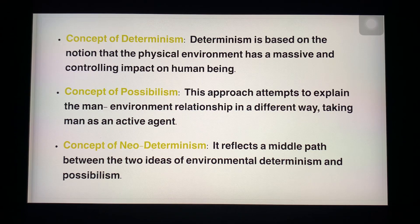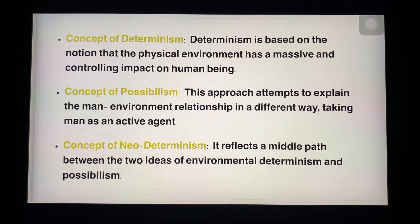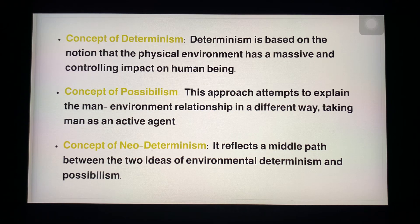Determinism is based on the notion that the physical environment has a massive and controlling impact on human beings. Determinism is dependent on the physical environment, which is quite large, and its controlling power impacts human activity. Natural forces like waves, water, air, and earth — everything created by God or the earth — we have no control over these. This is the physical environment which controls and impacts human activity.